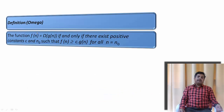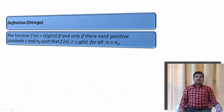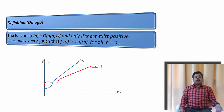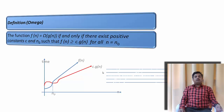Let us continue with the definition of Omega. The function f(n) = Ω(g(n)) if and only if there exist a positive constant c and n0 such that f(n) ≥ c·g(n) for all n ≥ n0. In Big O notation it was less than or equal to; in Omega it is greater than or equal to. On the graph, x-axis is number of inputs n and y-axis is time. After a certain value n = n0, all values of g(n) are less than or equal to f(n). We are trying to find a function g(n) such that g(n) is smaller than or equal to f(n) after some n ≥ n0.